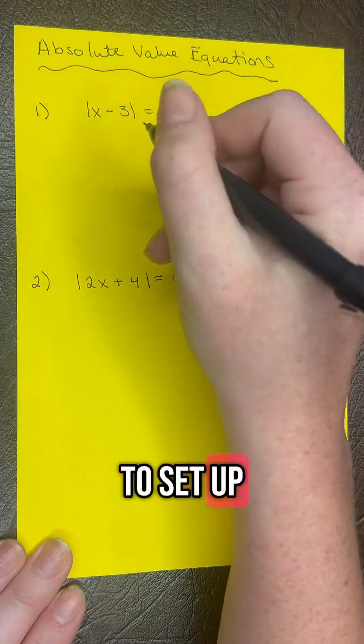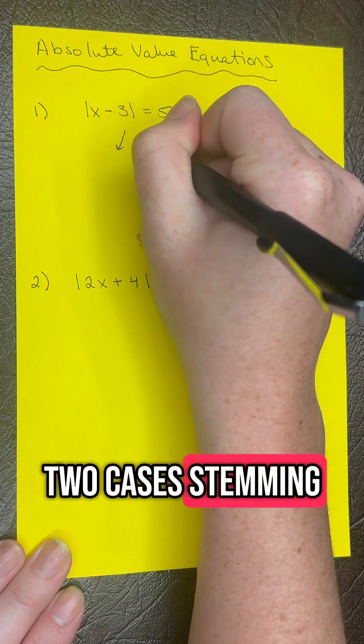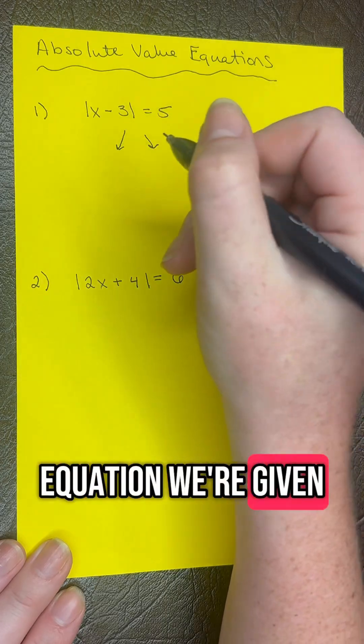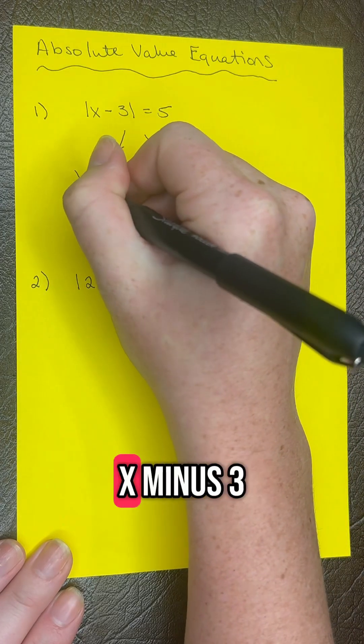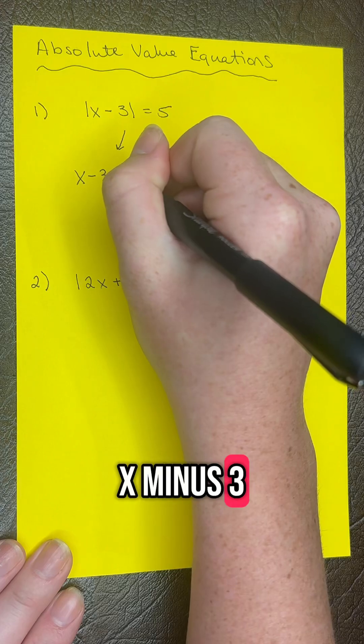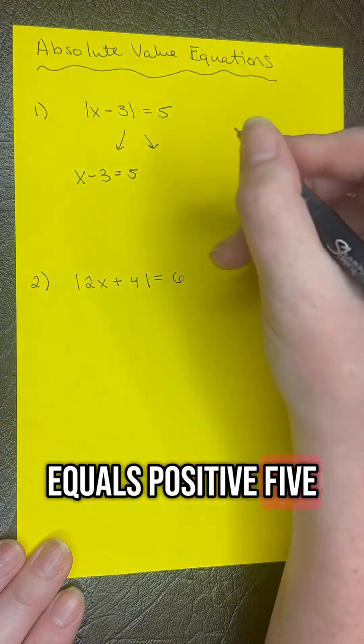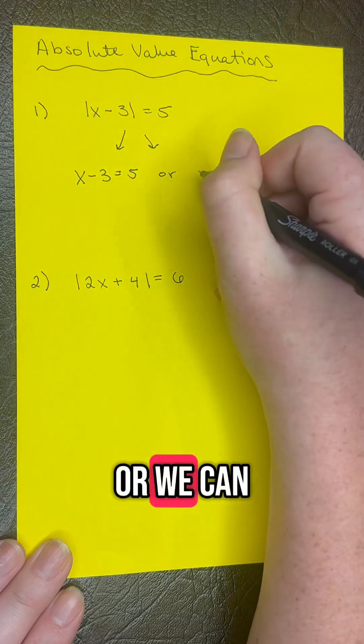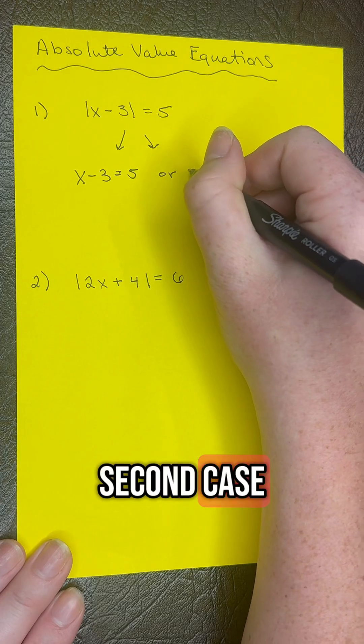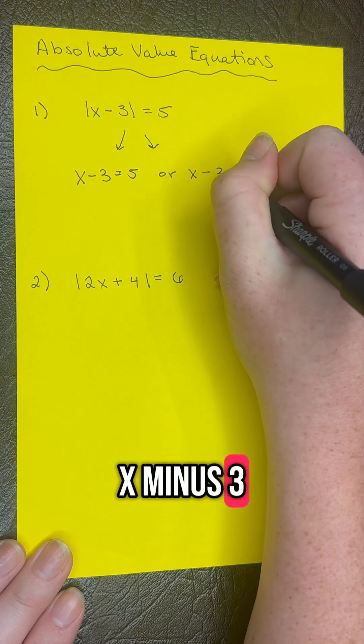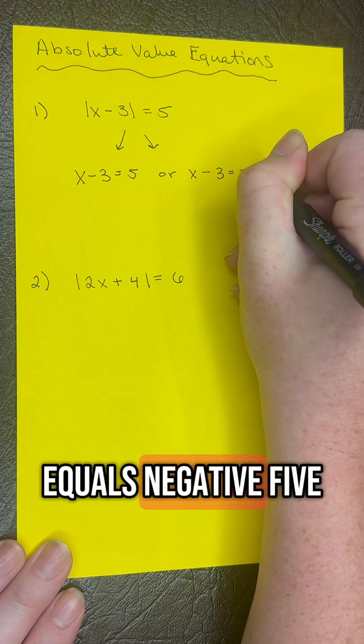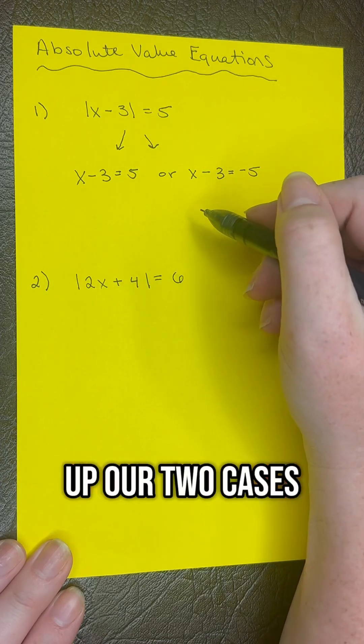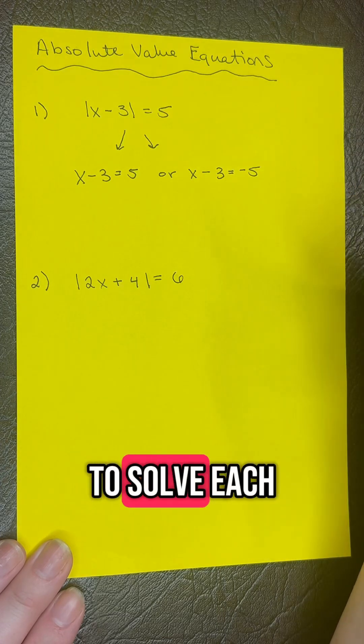We need to set up two cases from this equation. The first case is x minus 3 equals positive 5, or for the second case, x minus 3 equals negative 5. Once we set up our two cases, we just need to solve each.